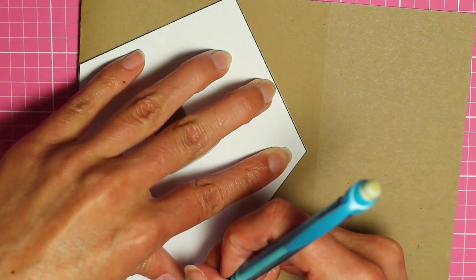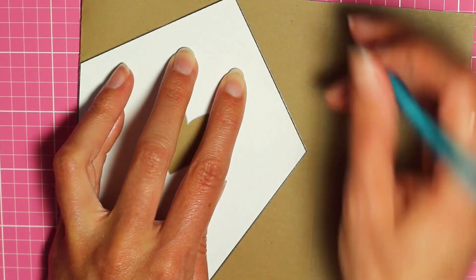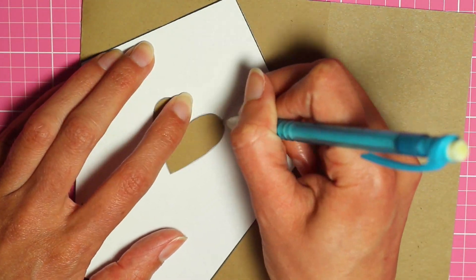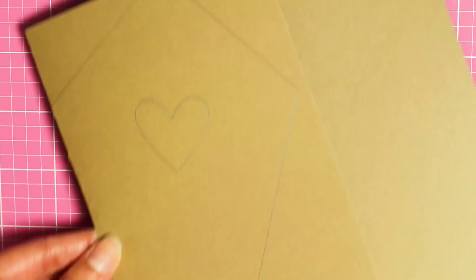Then I'm tracing around the pattern and I traced around the heart but you don't need to do that. And then just go ahead and cut it out.